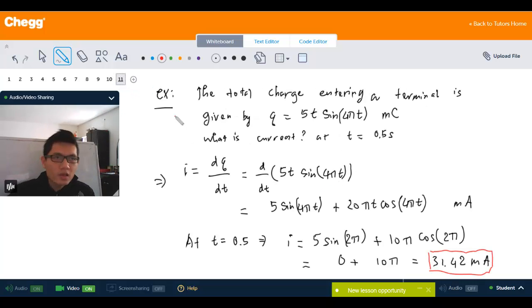So with that, we have an example, pretty simple. For the total charge entering a terminal is given by the charge q, which is 5 sine of 4 pi t millicoulombs. So you can imagine that as something like a terminal of a wire, and then the charge is coming here.